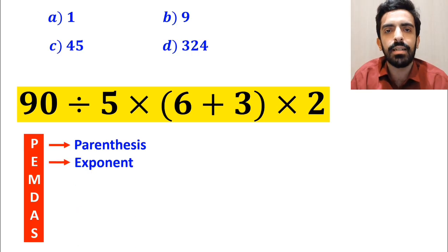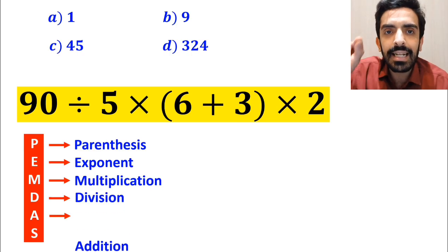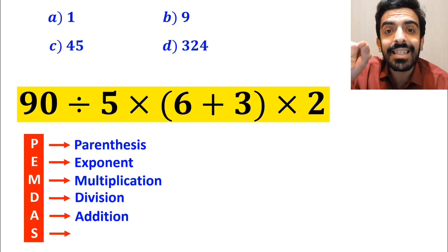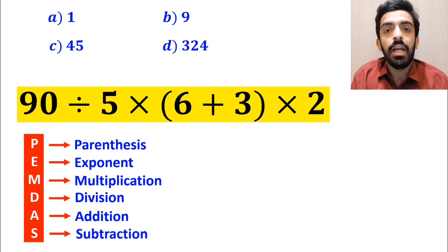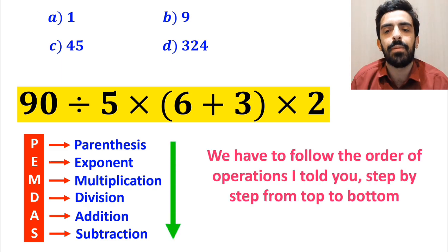E stands for exponent, M stands for multiplication, D stands for division, A stands for addition, and S stands for subtraction. We have to follow the order of operations I told you step by step from top to bottom.